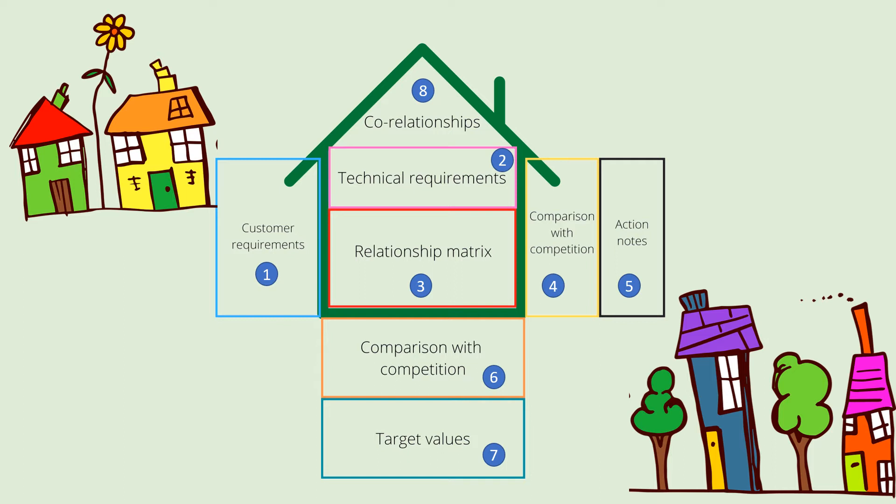You will also hear it called the House of Quality. In the House of Quality, you start with the Customer Requirements, followed by the Technical Requirements, then the Relationship Matrix. Next, you do a comparison with the competition, you take action notes, revisit the competition, establish target values, and co-relationships.